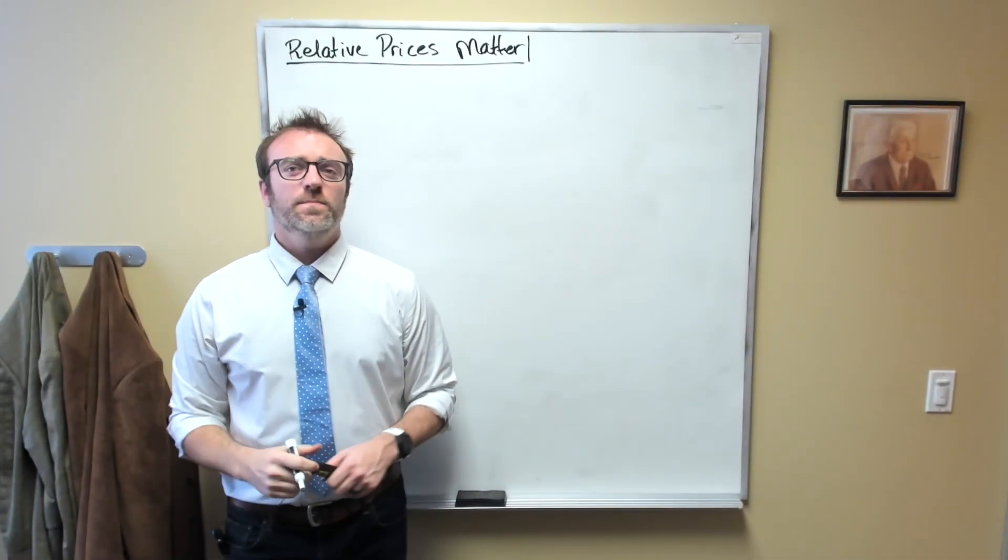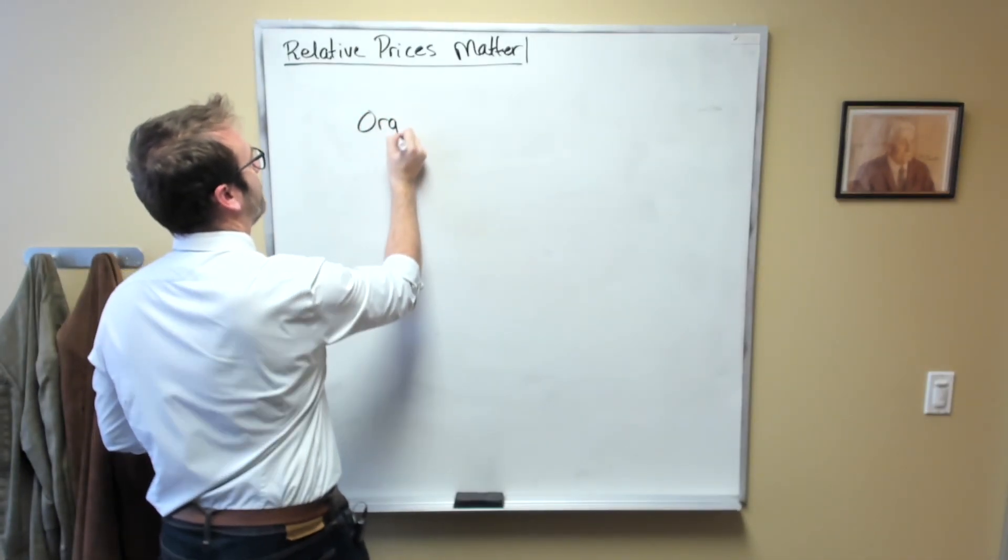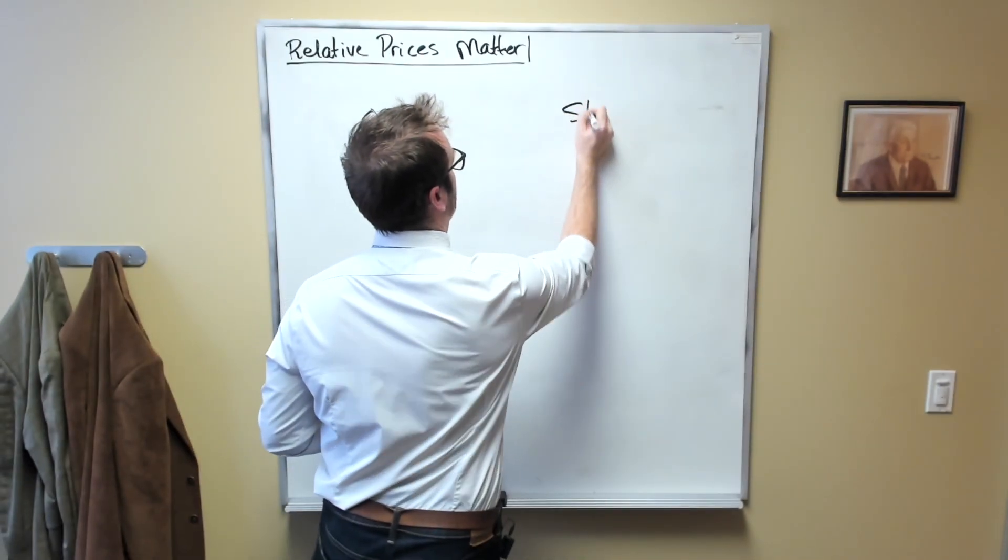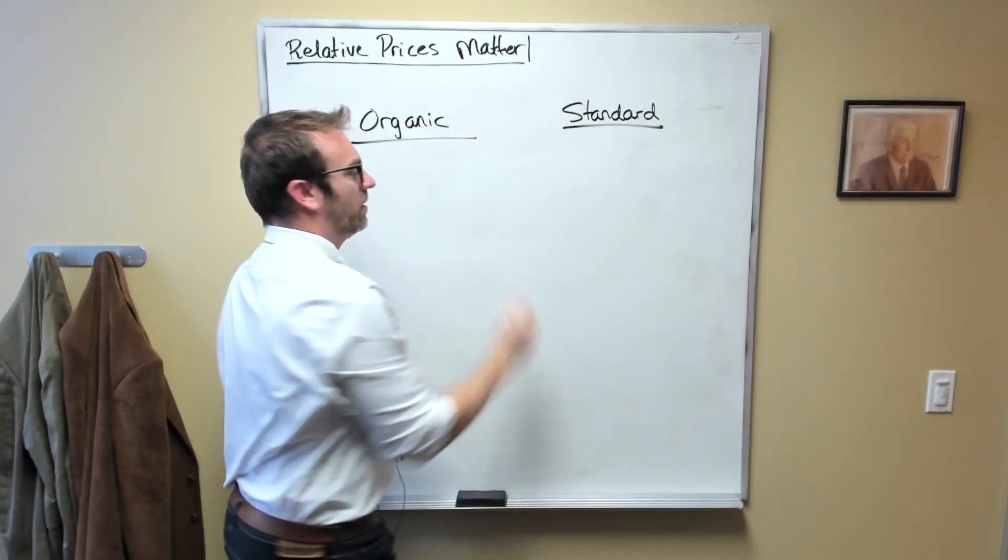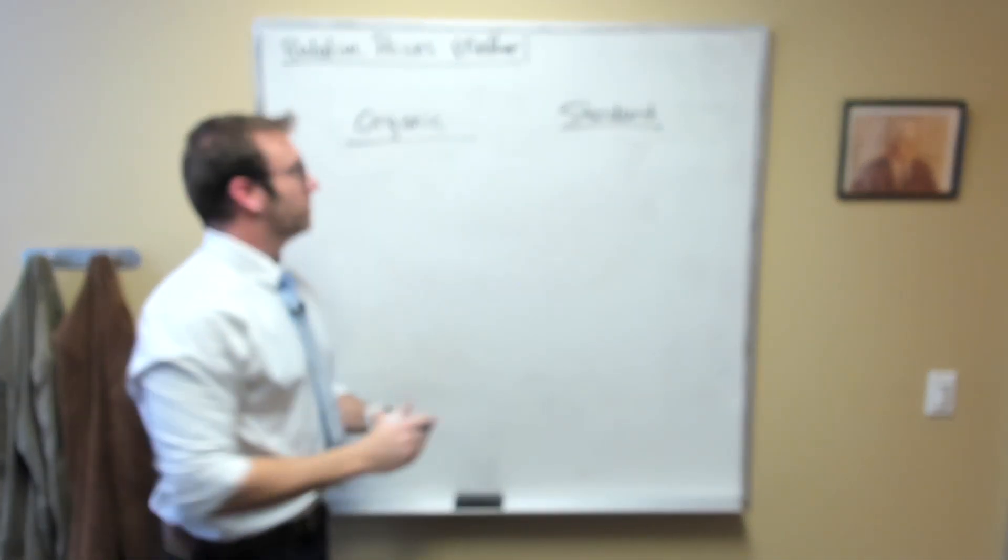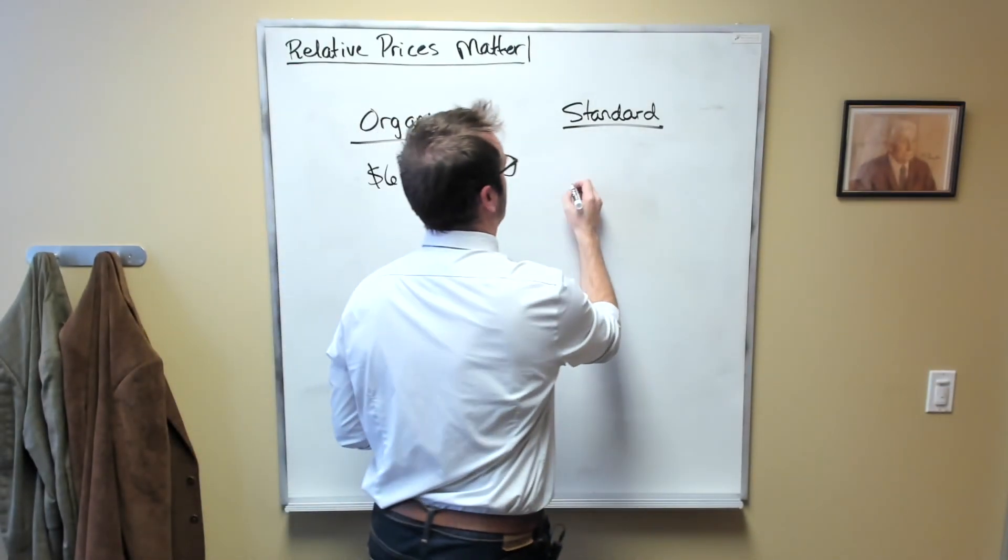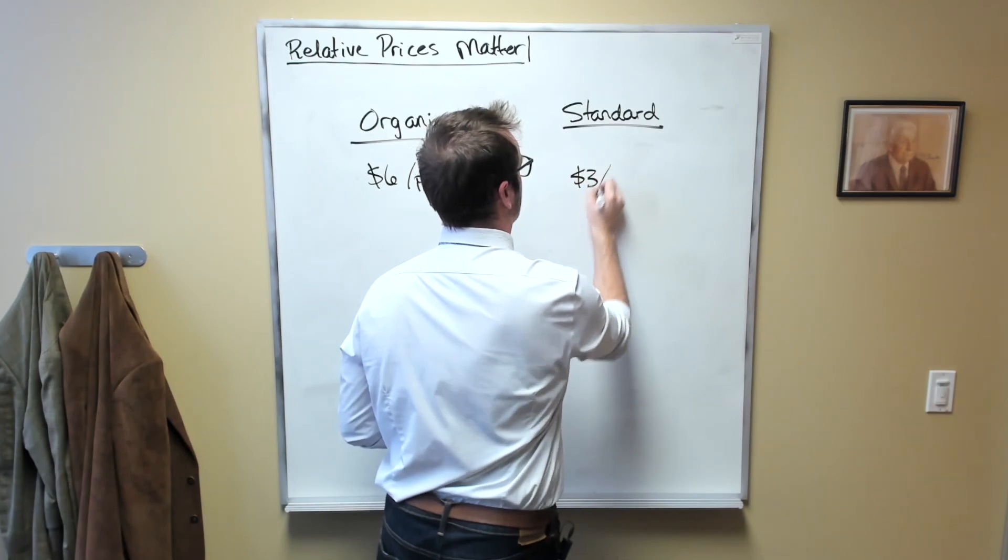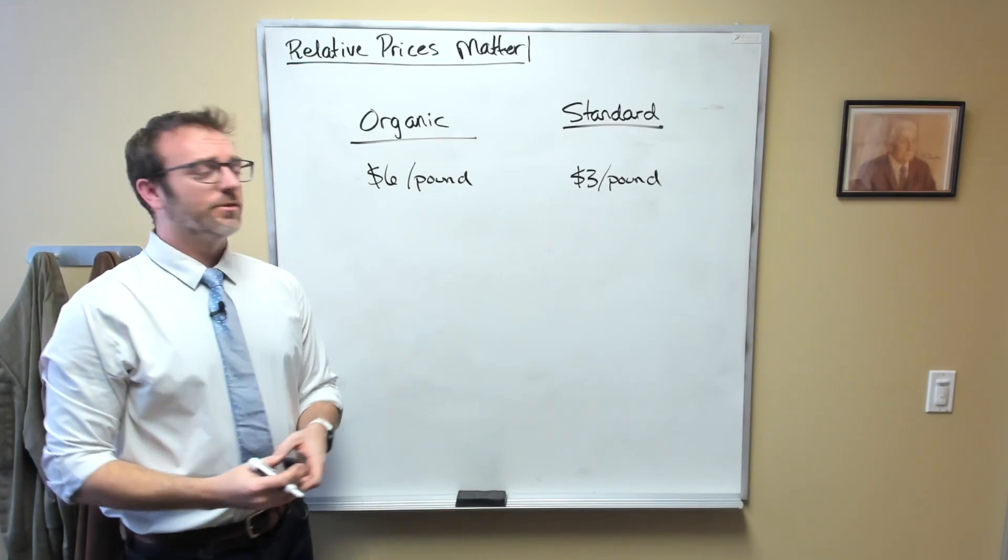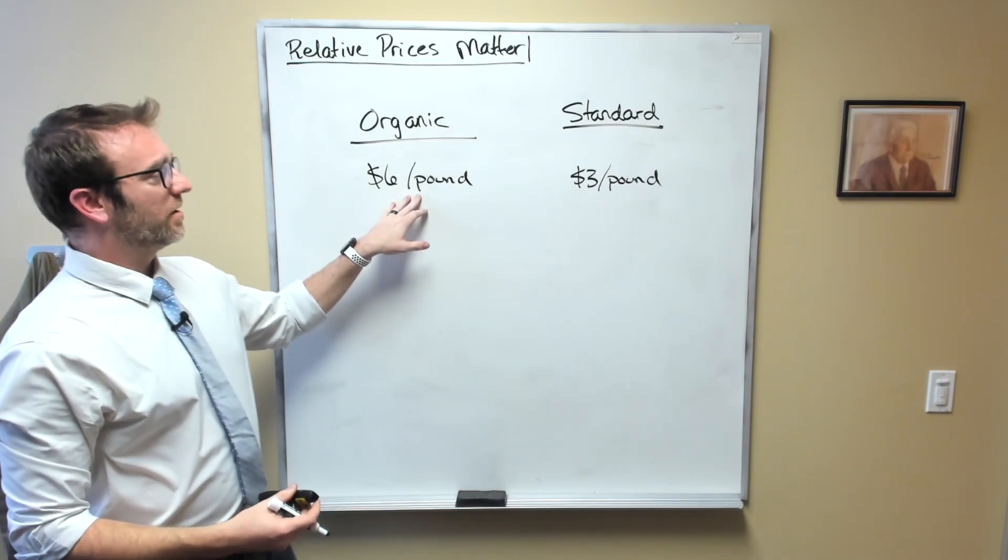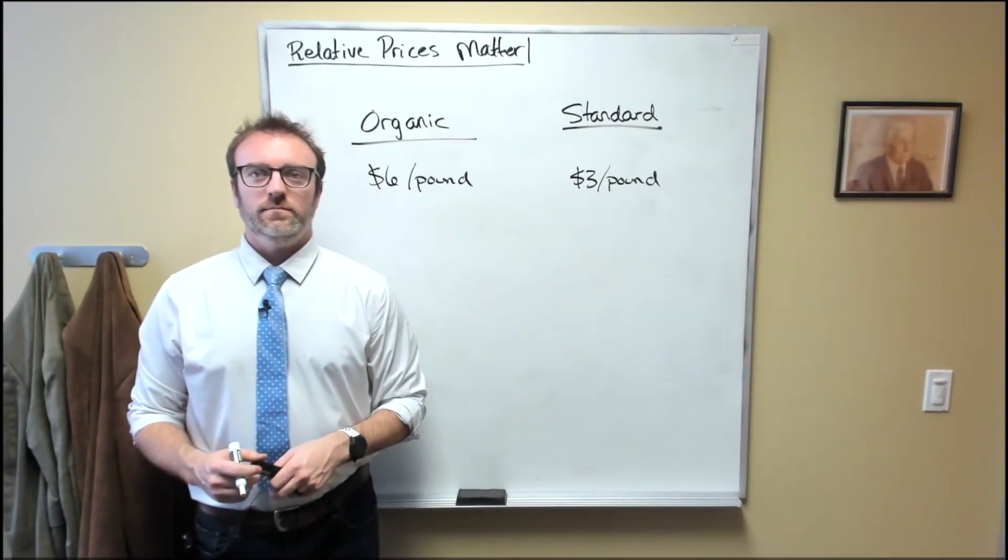As another example, suppose you have two different qualities of apples: organic apples and standard apples. The organic apples cost $6 per pound, and the standard apples cost $3 per pound. The relative price of 1 pound of organic apples equals 2 pounds of standard apples.